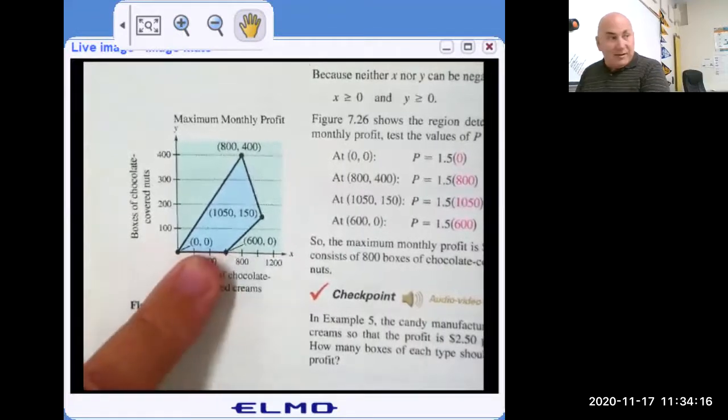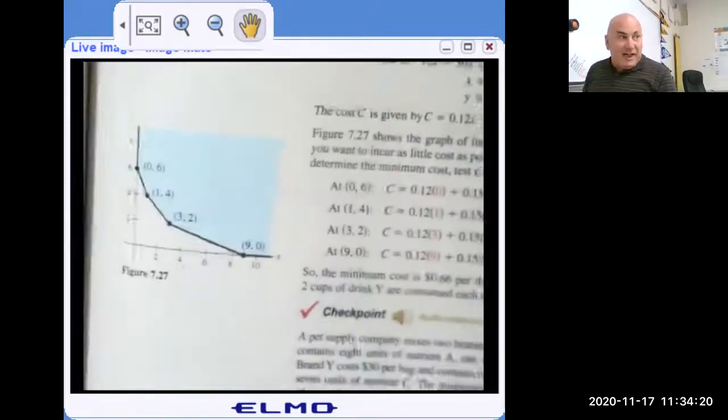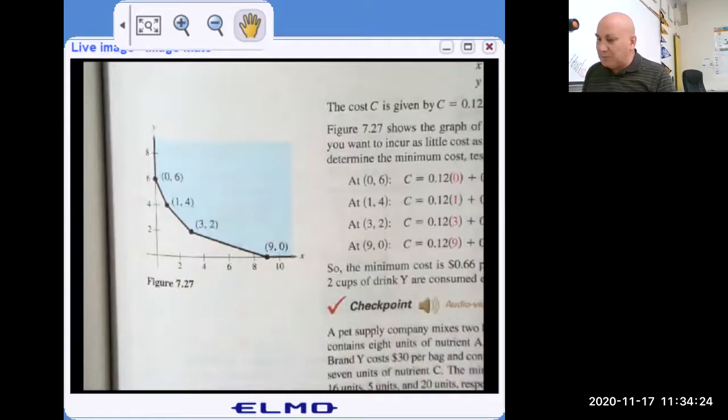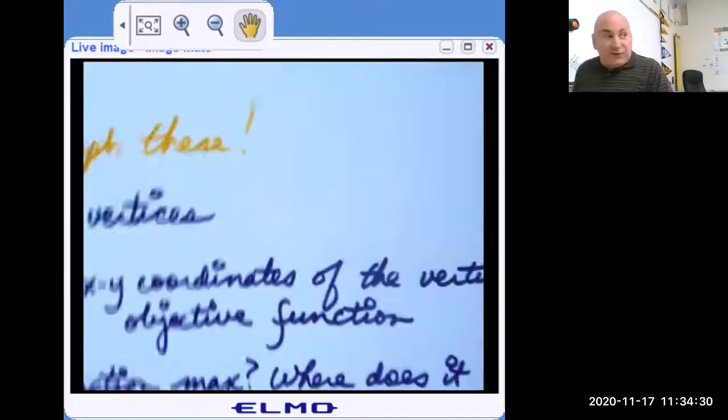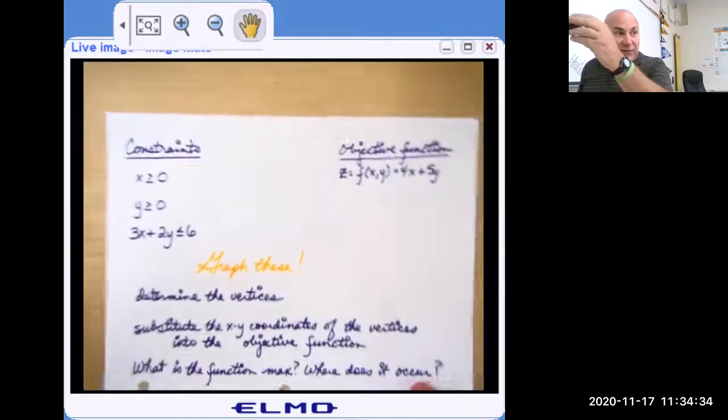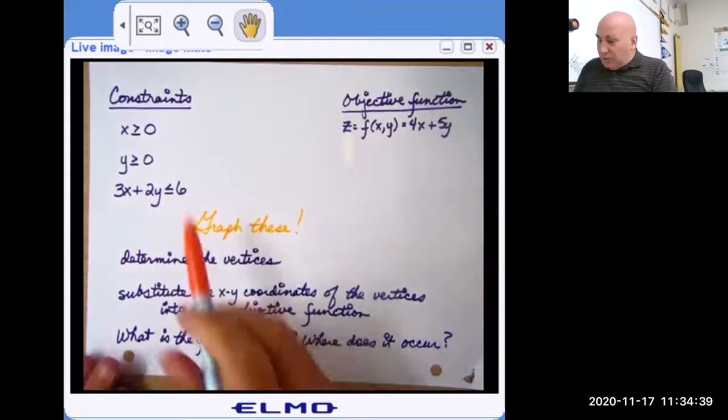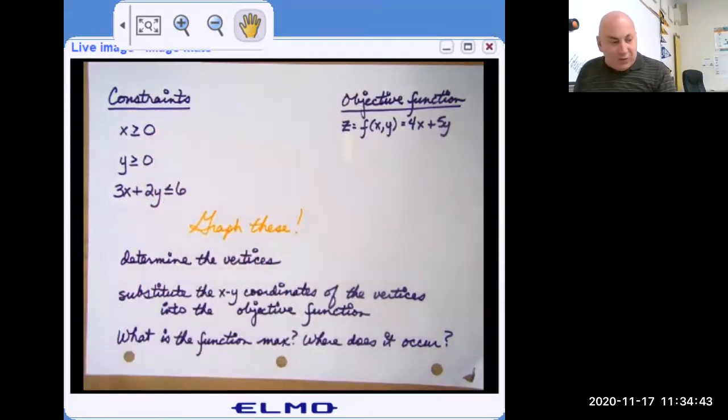Another one where we have a feasible region that's graphed. And then a last one where we have an unbounded region. So let's start with one where I give you the constraint. So this is kind of like the linear inequalities we were doing. If you write these down, we'll go over this in class.